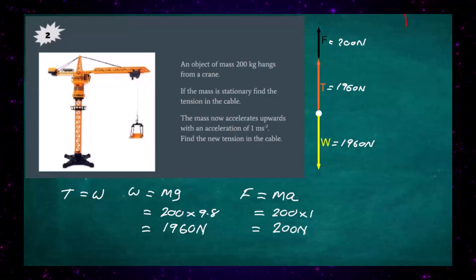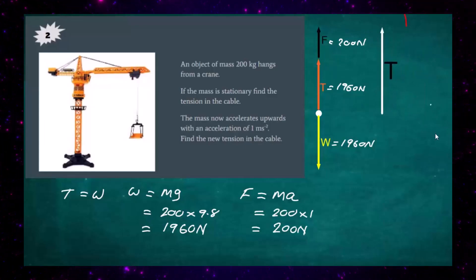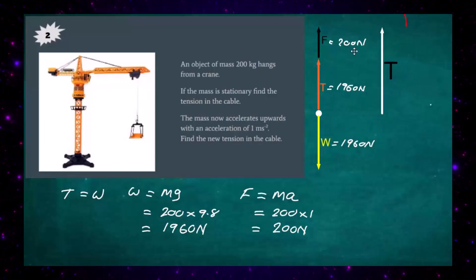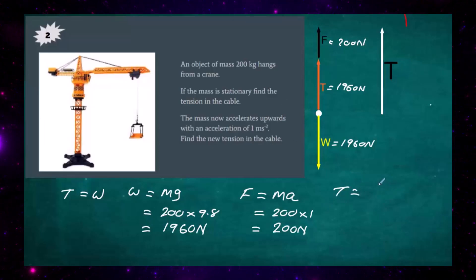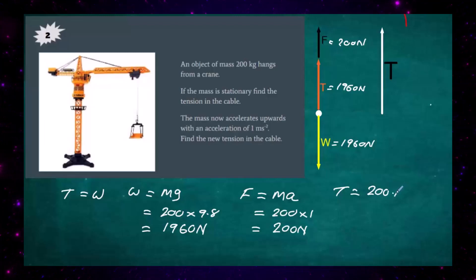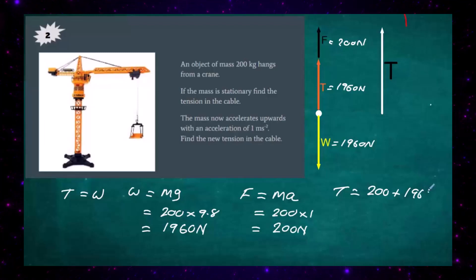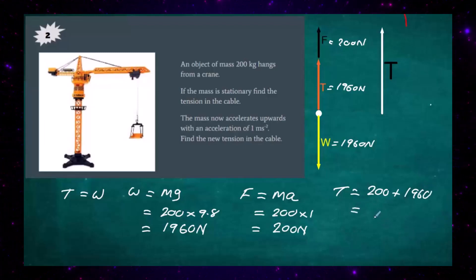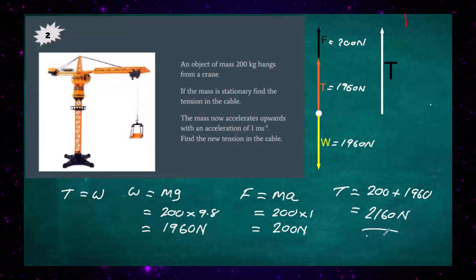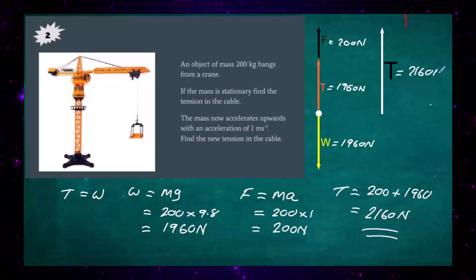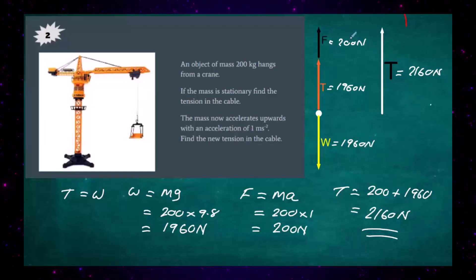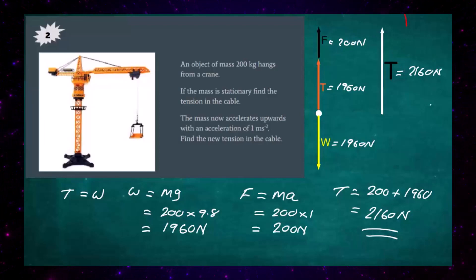The new tension in the rope is made up of the original tension plus the additional force due to the upward acceleration. So the new tension equals the unbalanced force of 200 newtons plus the original tension of 1960 newtons, giving a new tension of 2160 newtons. We can verify this: 2160 newtons tension take away 1960 newtons weight gives an unbalanced force of 200 newtons, confirming our answer.